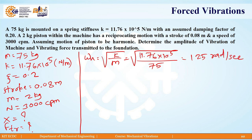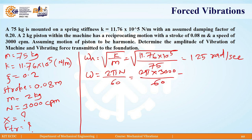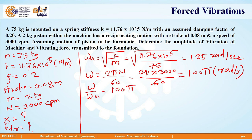Omega is 2π N upon 60, so 2 × π × 3000 divided by 60, which gives 100π radians per second. The ratio omega by omega_n is 100π divided by 125, which equals 2.51.